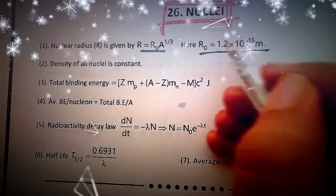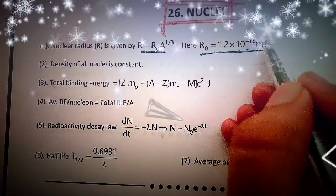R naught to formula is what happens. This is 1.2, then it's about 10 to the minus 15 meters.